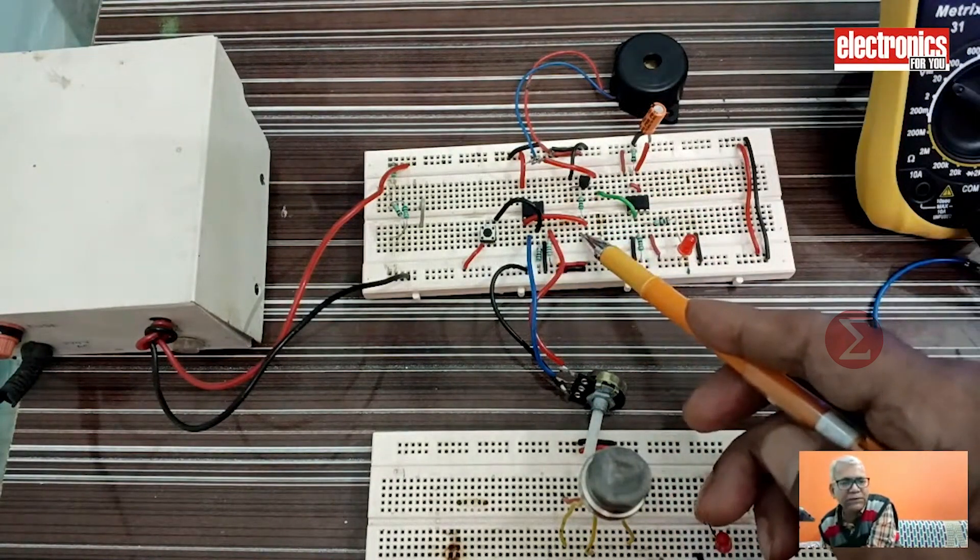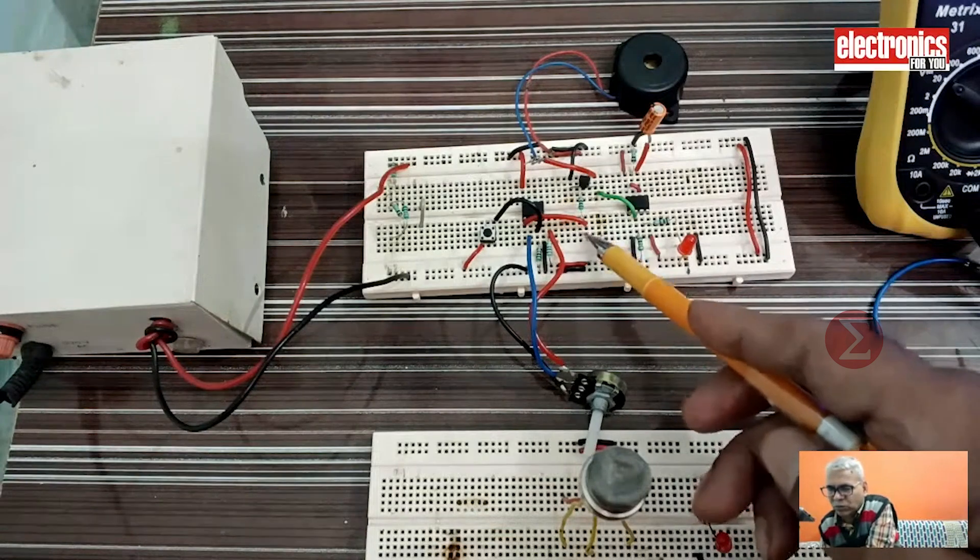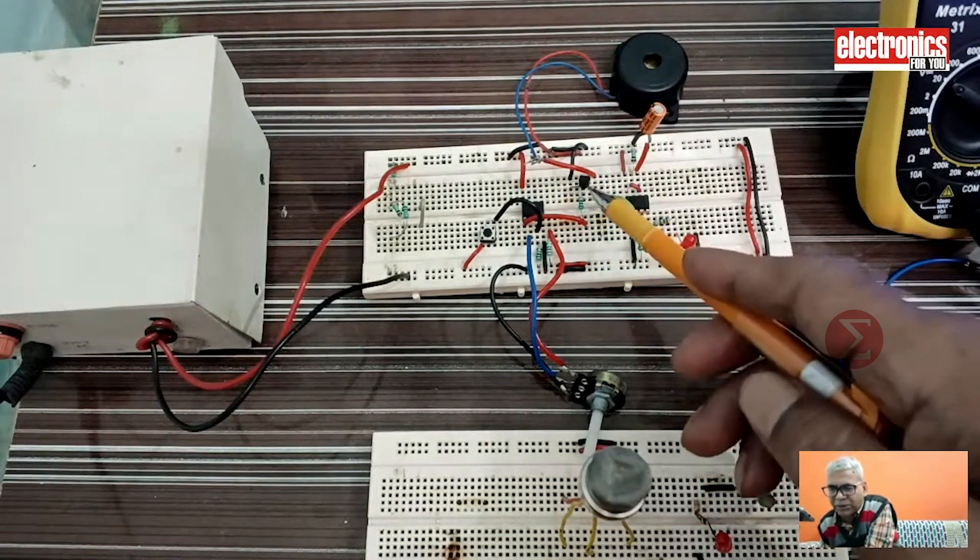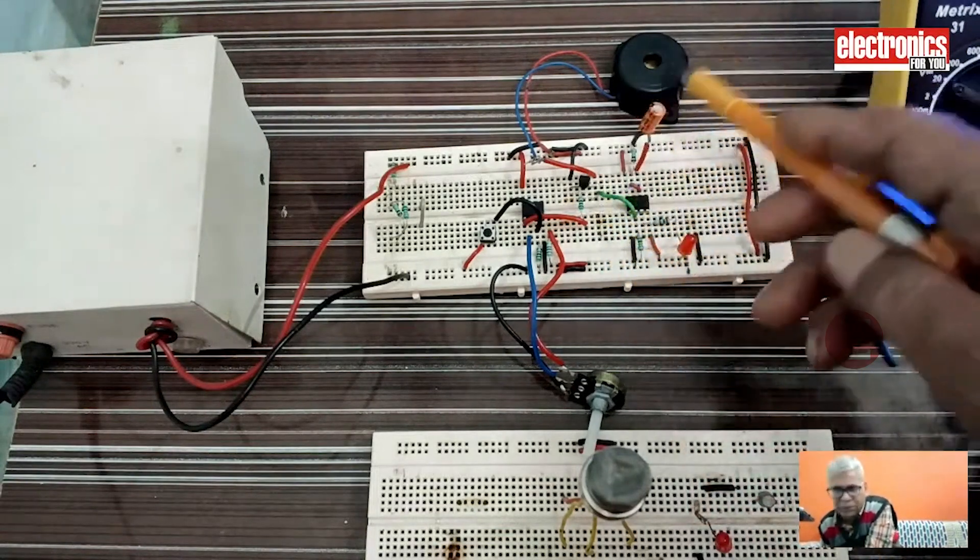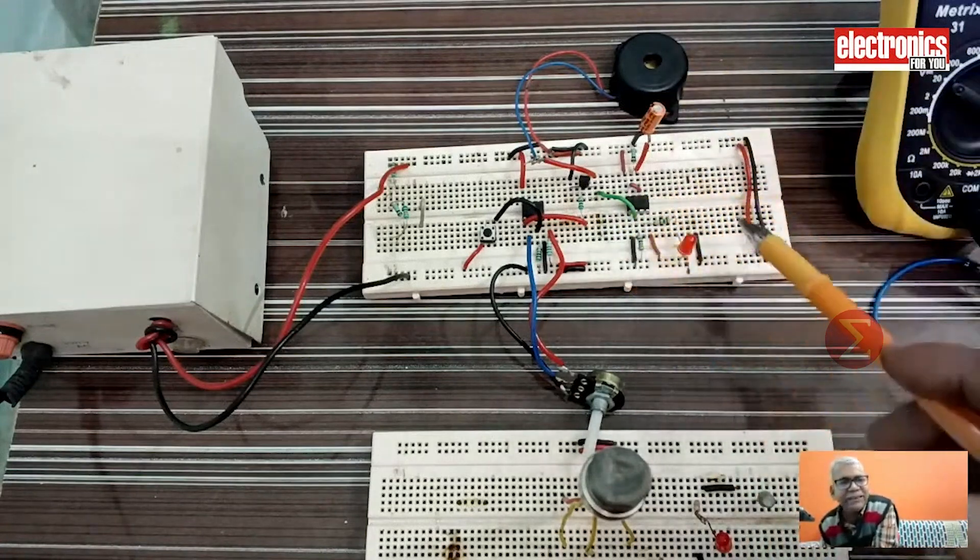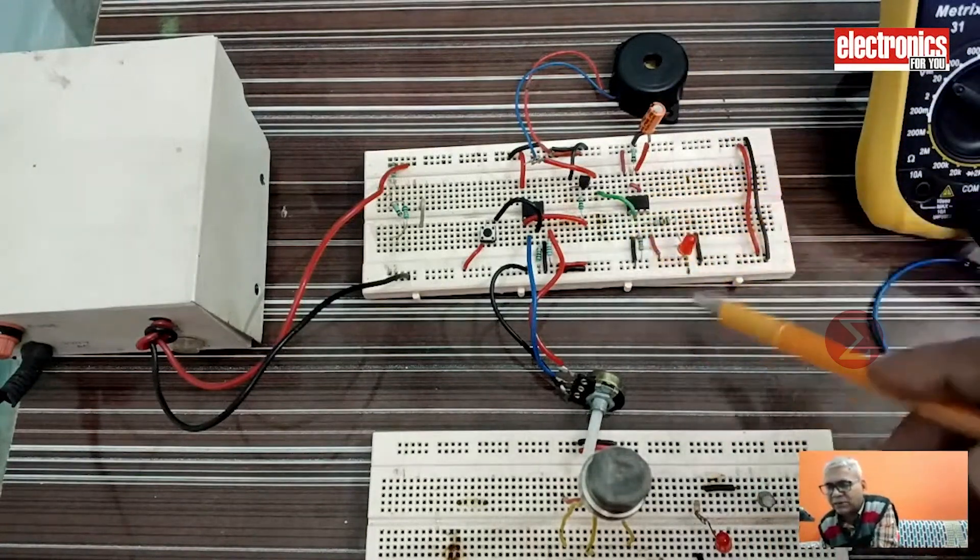Now whenever the output from the gas sensor is higher than the set reference voltage, the output of the operational amplifier will be high and the buzzer will blow. This circuit is to activate the exhaust fan whenever there is any leakage.